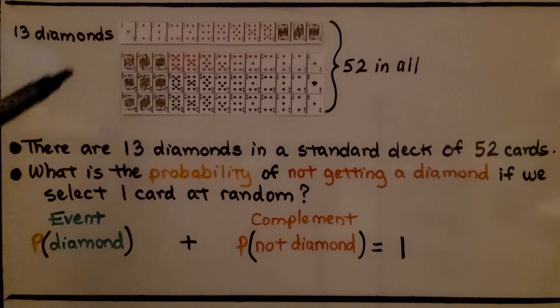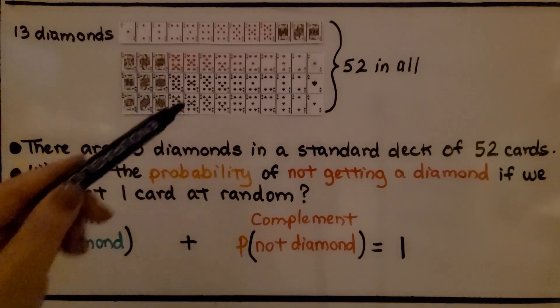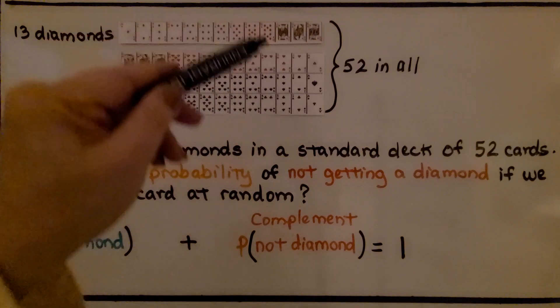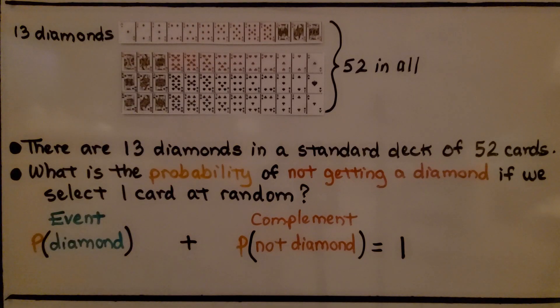In a full deck of cards, there are 13 diamonds, and there's 52 cards in the full deck. There are 13 diamonds in a standard deck of 52 cards, so what is the probability of not getting a diamond if we select one card at random? We have the event, picking a diamond, plus the complement of the event, not picking the diamond, is equal to one.